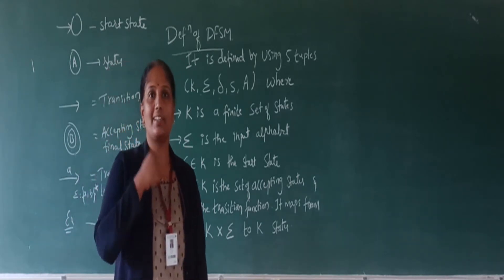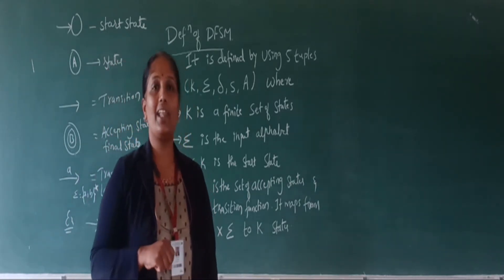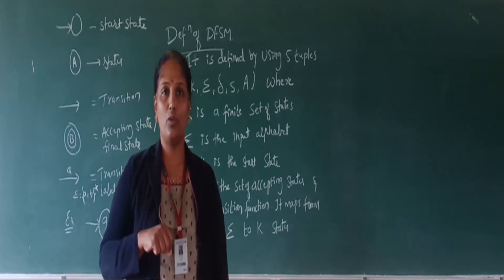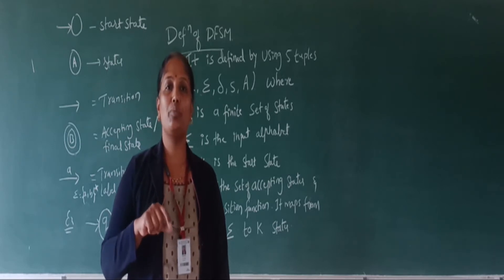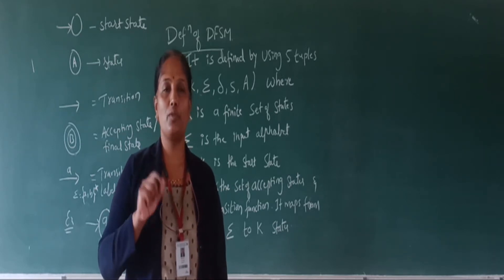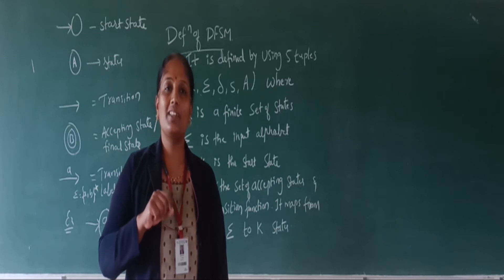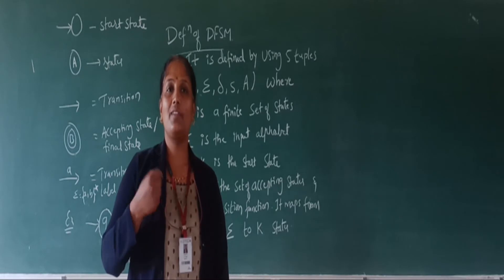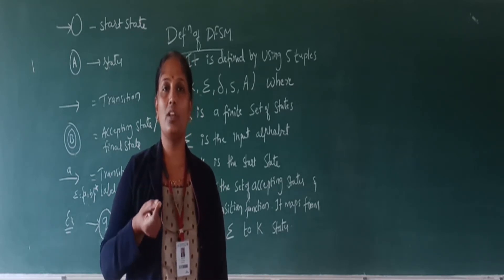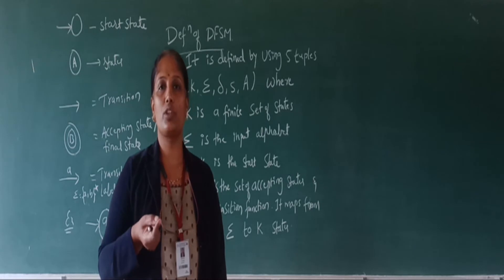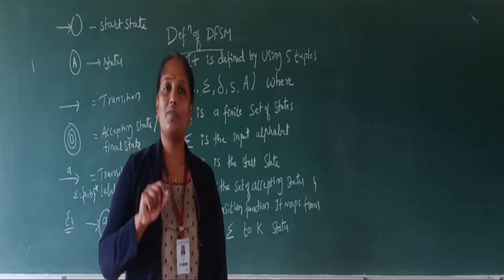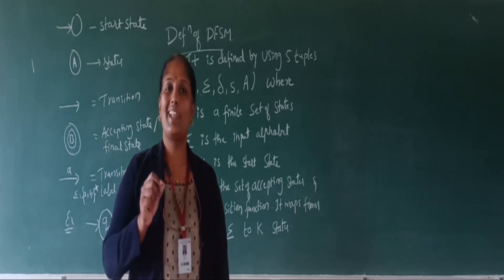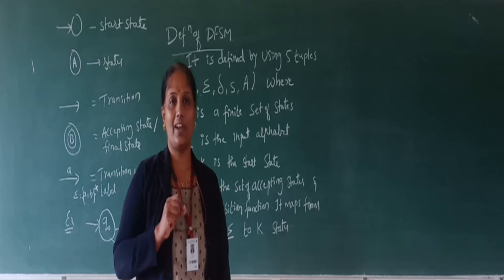For the deterministic finite state machine, we can take an elevator as an example. Assume that I am on the ground floor. After entering the elevator, I press 4 because I want to move to the 4th floor. The current state of the machine is ground floor. After pressing button 4, the machine will move to the 4th floor — it is fixed. The machine will not move to the 5th floor. That is one example of a deterministic finite state machine.